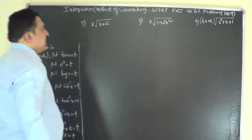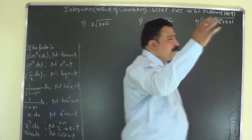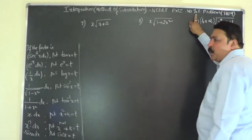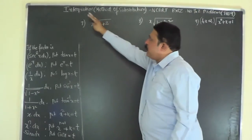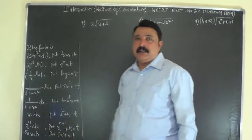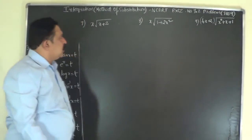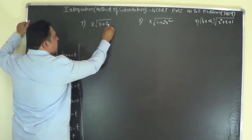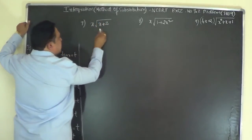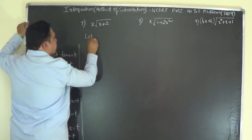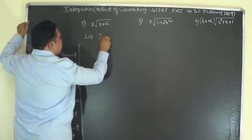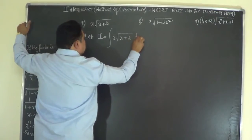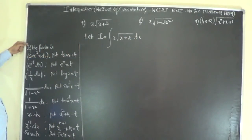In this video lesson we shall take up the next three problems of Exercise 7.2, which deals with integration by the method of substitution. Problem number 7: integrate x times the square root of (x+2). Write it as let I be equal to the integral of x times the square root of (x+2) dx.